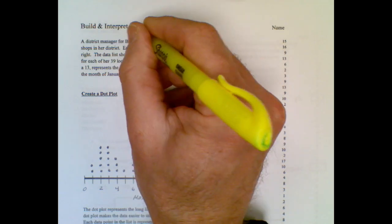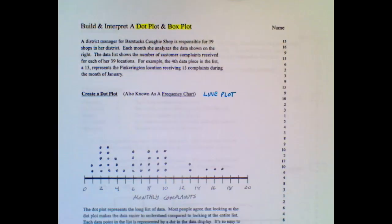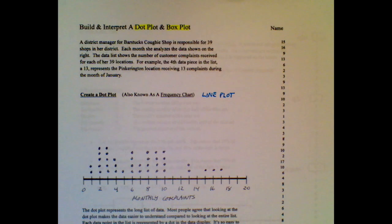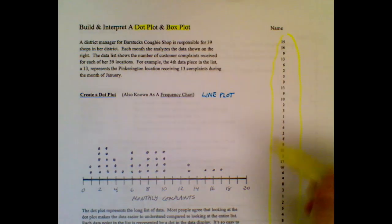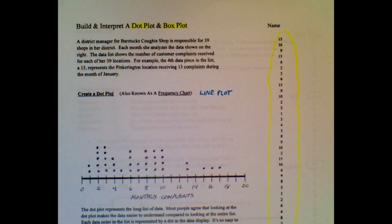We're going to take a look at what's called a dot plot and also a box plot, but to you what it means is we're taking a big list of data and turning it into a pretty picture.